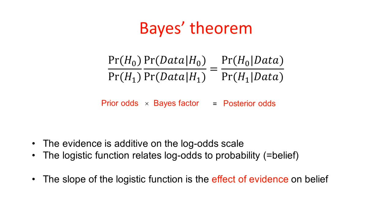Now we can relate the log odds to the probability using the logistic function. Recall that probability represents belief or plausibility. As the evidence is additive on the log odds, then the slope of the logistic function gives us the effect of evidence on belief.